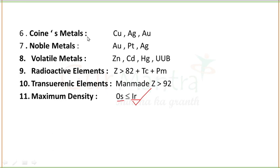Coinage metals are three: Cu, Ag, and Au. Noble metals are Au, Pt, and Ag. Volatile metals are Zn, Cd, Hg, and UUB — and importantly, Zn, Cd, Hg, and UUB are not considered D block elements or transition elements. Radioactive elements are those with atomic number more than 82, plus Tc and Pm — both of these are also radioactive elements.